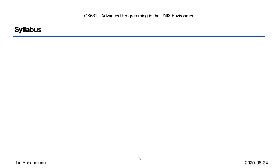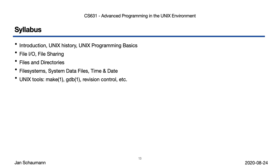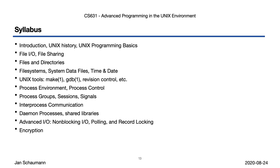Now that we have all the formalities out of the way, let's take a look at our syllabus. We will by and large follow the outline of the course book, although we will also throw in a lecture on using the UNIX environment in an efficient manner. We will begin with local file I/O and file systems, then take a look at process relationships, move on to inter-process communication and network programming, before rounding out with a number of mixed and advanced topics. The order of the lectures may be subject to change depending on time and class interest.